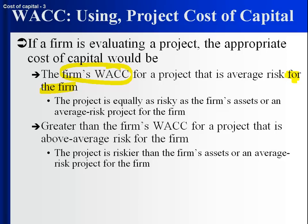Suppose the firm is looking at a project that is above average risk for the firm. This project is riskier than the stuff that the firm is doing. Then the appropriate cost of capital for this project would be greater than the firm's weighted average cost of capital. Weighted average cost of capital is appropriate for something that's just as risky as what the firm's doing. Here, it's above average risk — it's riskier — therefore the cost of capital should be greater than the weighted average cost of capital.